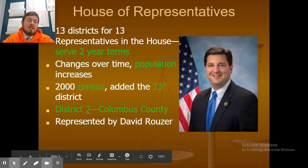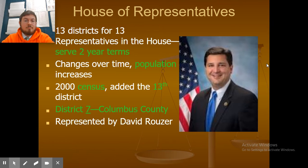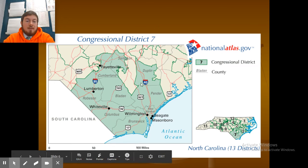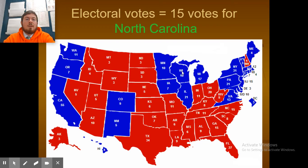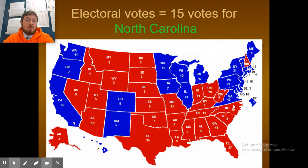We fall under District 7, which is where Columbus County is, and we are represented by David Reuser. Here's a map of the 7th Congressional District in North Carolina — it covers most of southeastern North Carolina. North Carolina has 15 electoral votes because we have 13 House members and two Senate members: 13 plus 2 equals 15.